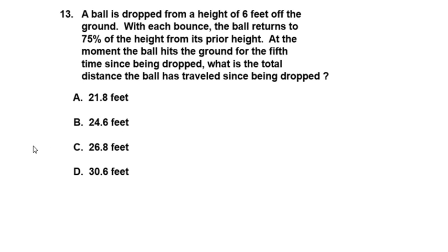This is the Pre-Calculus Spring 2015 ACP study guide, problem 13. A ball is dropped from a height of six feet off the ground. With each bounce, the ball returns to 75% of the height from its prior height. At the moment the ball hits the ground for the fifth time since being dropped, what is the total distance the ball has traveled? This is the district's version of a real-world example of using a series.